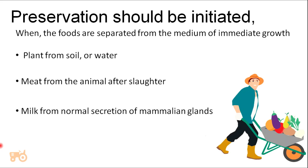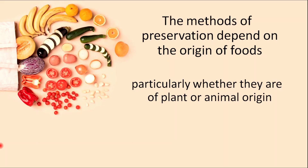Preservation should be initiated when the foods are separated from the medium of immediate growth. For example, plant from soil or water, meat from the animal after slaughter, milk from normal secretion of mammalian glands. The methods of preservation depend on the origin of foods, particularly whether they are of plant or animal origin.